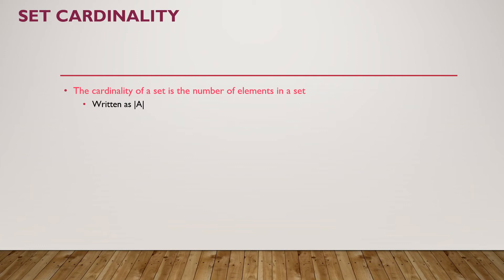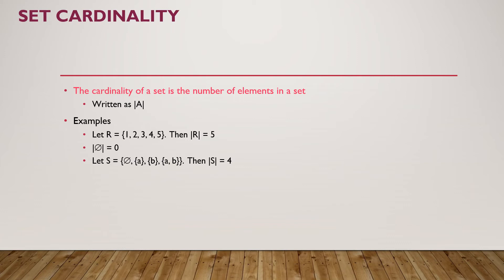The definition of set cardinality: cardinality is the number of elements in a set, written as |A|. For example, if we take R as {1, 2, 3, 4, 5}, we have 5 elements, so the cardinality of R is 5. The cardinality of the empty set is 0. For a set S containing elements 5A, B, and AB, there are 4 elements so the cardinality is 4. If a set has one element, it is also called a singleton.